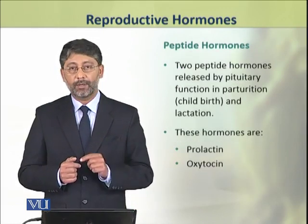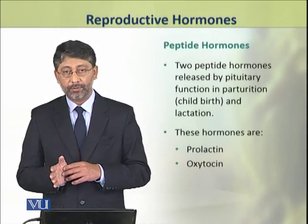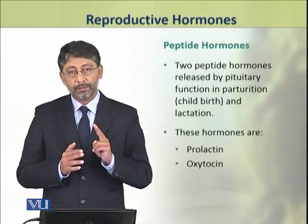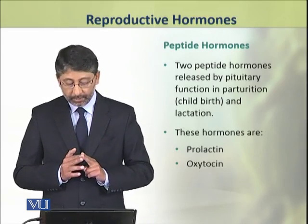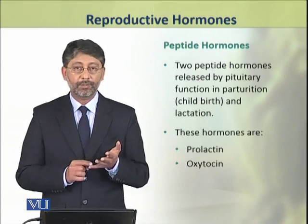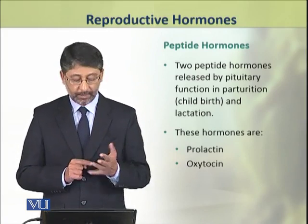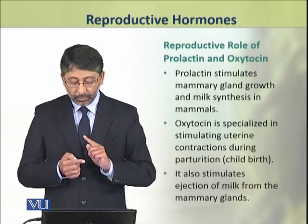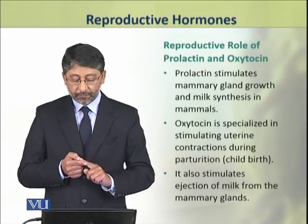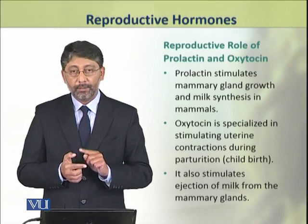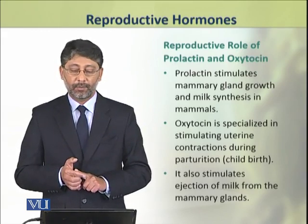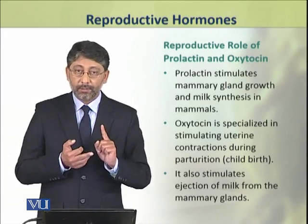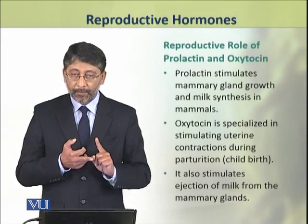In addition to steroid sex hormones, two peptide hormones also play an important role during parturition and lactation. These hormones are prolactin and oxytocin. Prolactin stimulates the development and growth of mammary glands and milk synthesis in mammals. Oxytocin plays a specialized role during parturition.